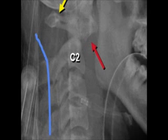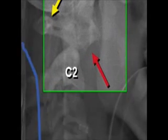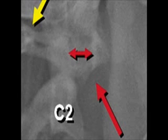You can see that the body of C1, as indicated by the yellow and red arrows, is markedly forward on the body of C2. The blue line, which is supposed to smoothly connect all the spinal laminar white lines, clearly misses posteriorly the spinal laminar white line of C1, indicated by the yellow arrow. There is a marked increase in the predentate space — in the actual radiograph this measured 15 millimeters.